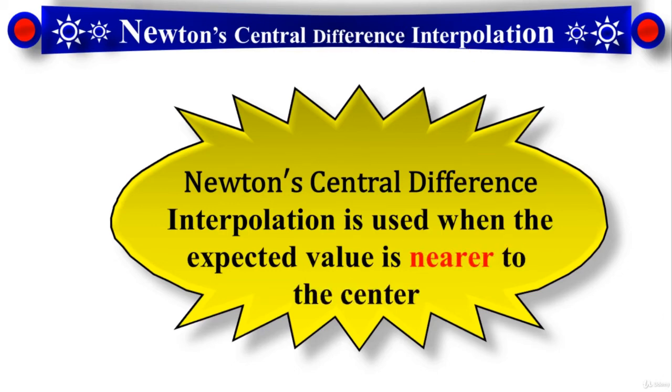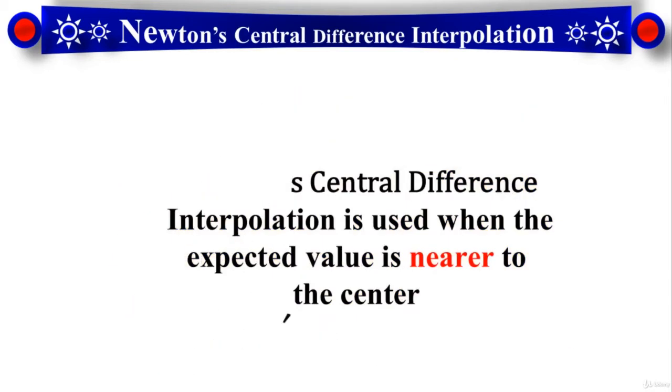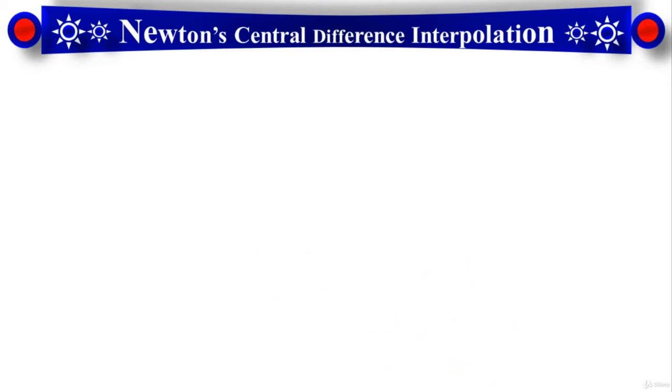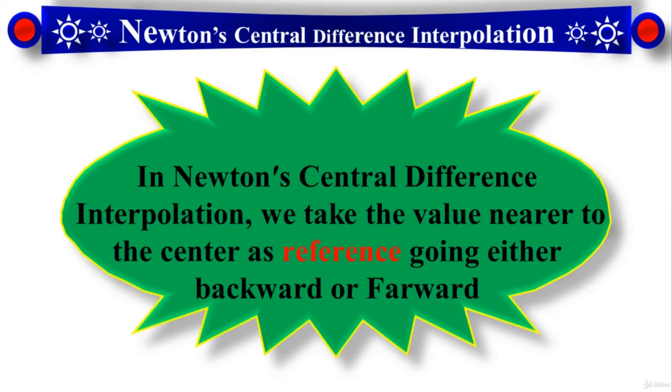It's pretty clear from the word central which means something in the center or in the middle. In Newton's Central Difference Interpolation the reference point is going to be in the center. We have seen that in Forward Difference Interpolation the initial point was the reference point. In Backward Difference Interpolation the reference point was the last point, but here the reference point is at the center. In Newton's Central Difference Interpolation we take the value near to the center as the reference, going either backward or forward.